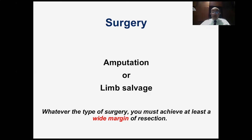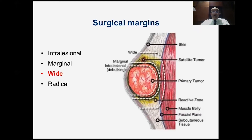What are the surgical margins we should know? Enneking divided the surgical margins into four types: intralesional, marginal, wide, and radical. If your resection margin goes through the tumor, like when we do curettage, this is called an intralesional margin — obviously not suitable for malignant tumors, but suitable for benign tumors. If you remove the tumor by passing through the pseudo-capsule, you remove the tumor in total but micrometastases will be left behind — also suitable for benign tumors, not malignant ones.